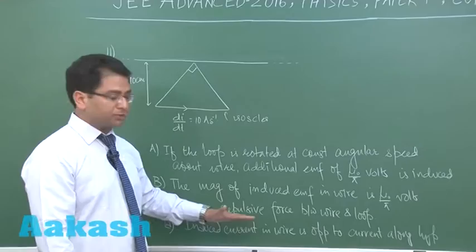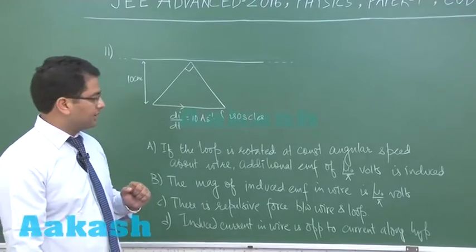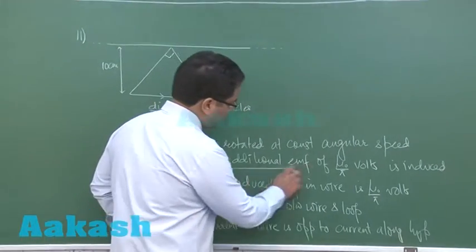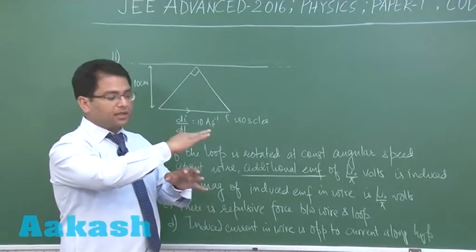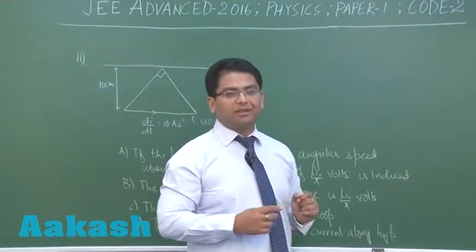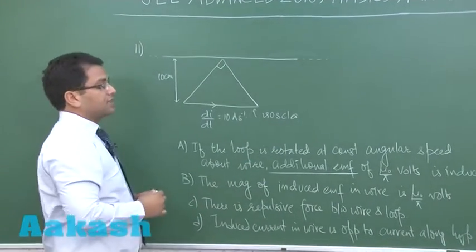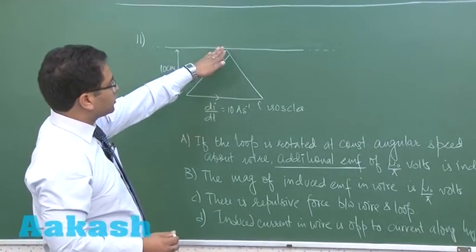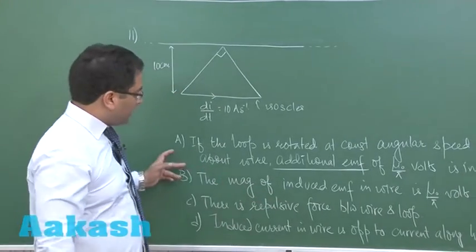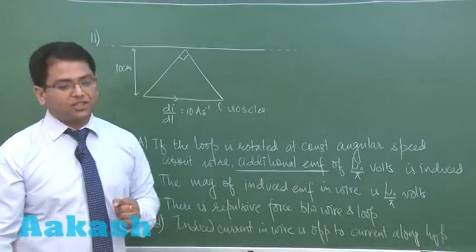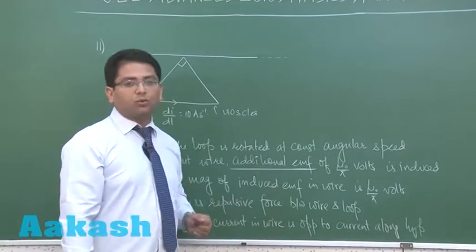We need to evaluate four options. If the loop is rotated at constant angular speed about the wire, the word 'additional' indicates the EMF due to rotation. However, there would be no EMF due to rotation because when the loop is rotated about the wire, there is no flux change — every position is equivalent. So rotation does not produce any change in flux, making this option incorrect.